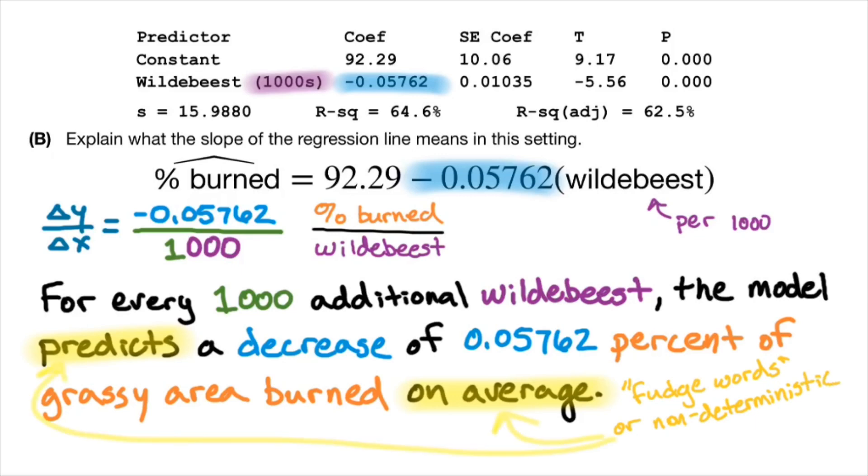They help me communicate that this linear relationship is not deterministic, meaning it is not for every 1,000 additional Wildebeest, there will be a decrease of 0.05762% of grassy area. No, no, no, no. It's just what we're predicting. It's what we expect to happen on average, what tends to happen, what we've seen usually happen.